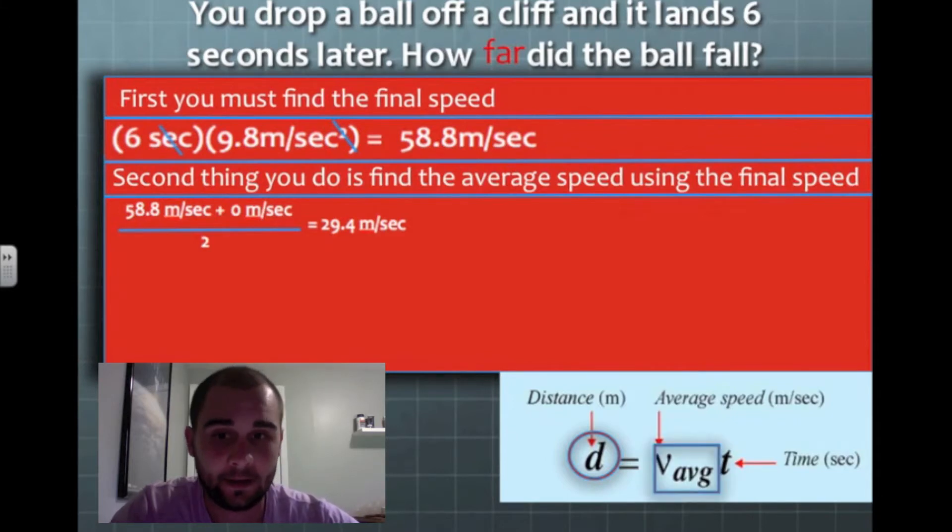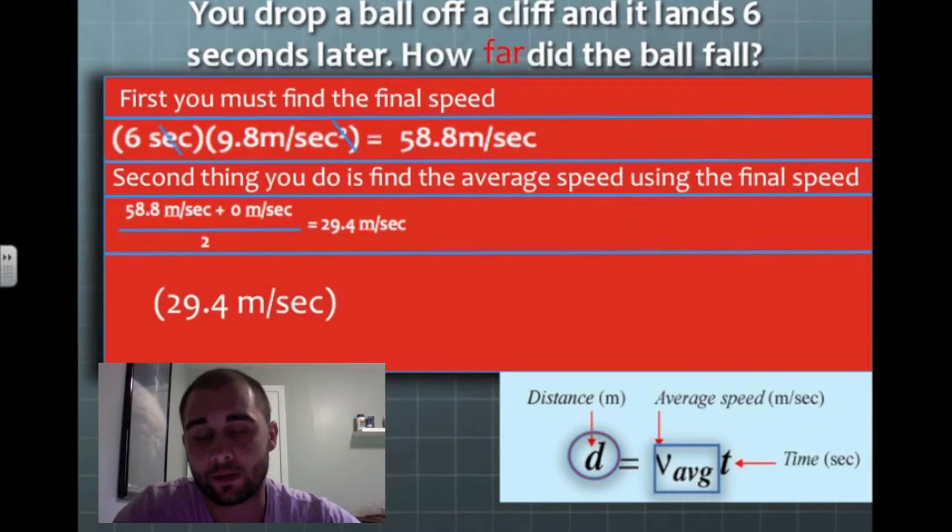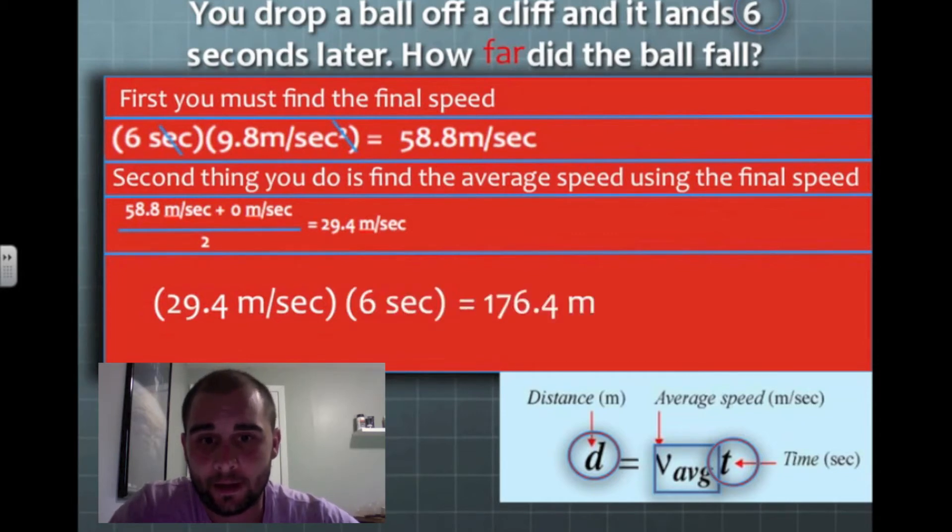Now, I'm going to plug that in and multiply it by six. So 29.4 meters per second, that's our average velocity, times time, which is six. When I multiply those two together, I will end up with 176.4 meters.